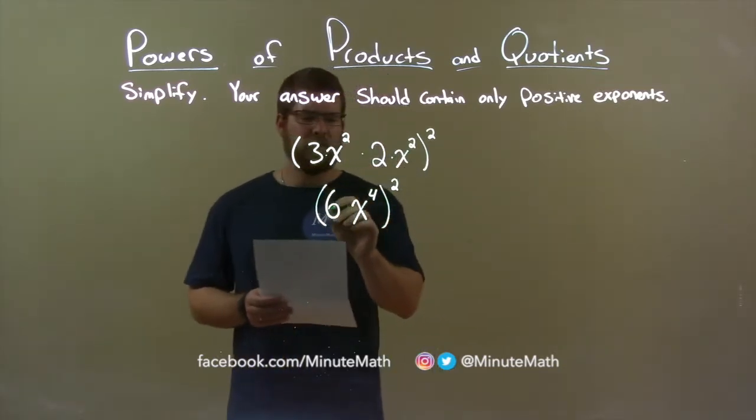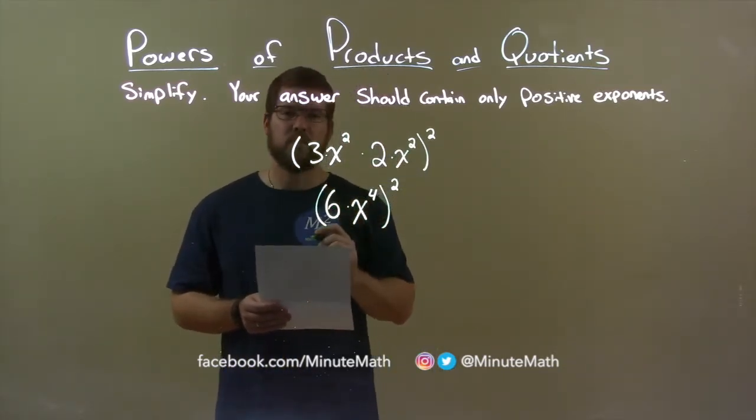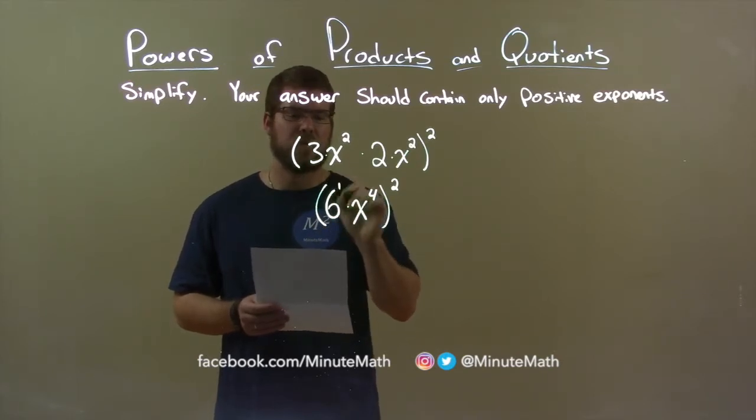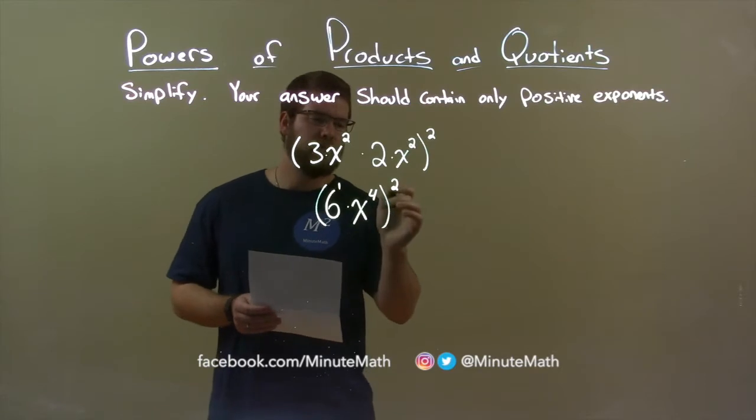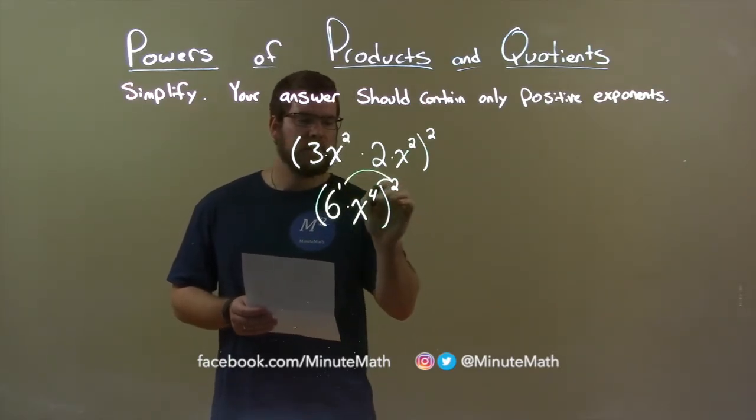So, now let's keep going. Between 6 and x to the fourth is multiplication, and 6 is raised to the first power, right? When it's not written, first power. To distribute this squared, we multiply that to each exponent.